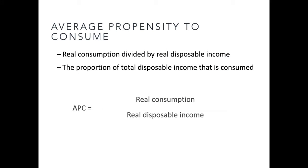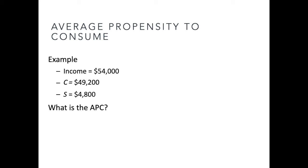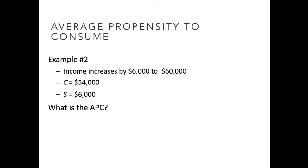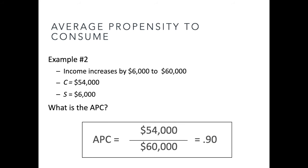The average propensity to consume is real consumption divided by real disposable income — the proportion of total disposable income that is consumed. For example, with income at $54,000 and consumption at $49,200, the average propensity to consume is $49,200 divided by $54,000, which equals 0.911. In a second example, income increases to $60,000 and consumption equals $54,000, giving an average propensity to consume of $54,000 divided by $60,000, which is 0.9 or 90%.